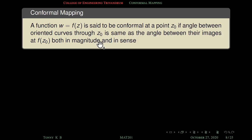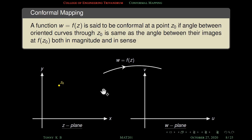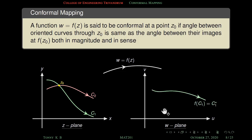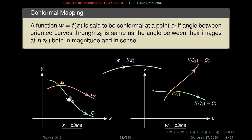Now the main topic: conformal mapping. A function w = f(z) is said to be conformal at a point z₀ if the angle between oriented curves through z₀ is the same as the angle between their images at f(z₀), both in magnitude and in sense. Consider a point z₀ in the z-plane. c₁ and c₂ are two oriented curves passing through z₀. Their images are f(c₁) = c₁* and f(c₂) = c₂*, and their intersection point is f(z₀).